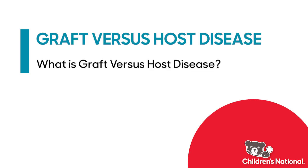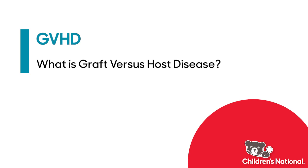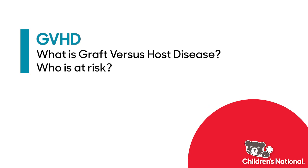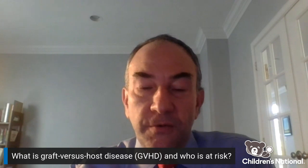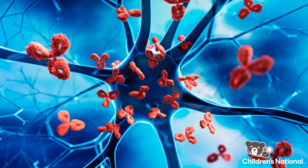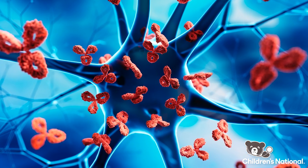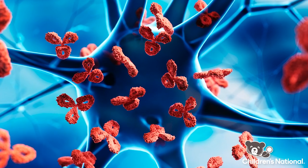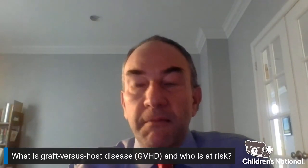So what is graft versus host disease, which we'll call GVHD, and who is at risk? GVHD can occur in any allogeneic transplant — any transplant where you're receiving cells from another individual — and it occurs when the new T cells, or the immune cells from the donor, attack your body. The new T cells are attacking the recipient's body and can launch an attack.